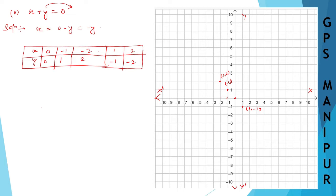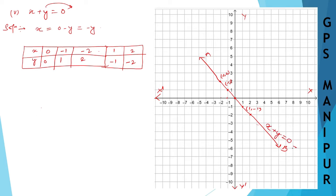For x equal to 2, y is minus 2 — point (2, minus 2). These two points are going to meet straight here. Join all these points. This is your line. Please use the scale properly. This is the line for x plus y equal to 0.